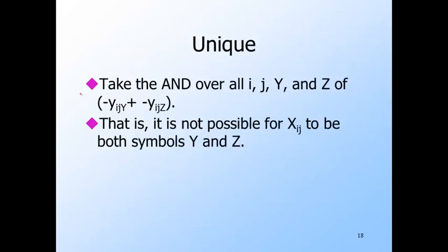For unique, we use the AND over all IDs I, positions J, and states or tape symbols Y and Z, of the expression NOT Y-sub-IJY OR NOT Y-sub-IJZ. This little expression is satisfied as long as at most one of the two Boolean variables Y-sub-IJY and Y-sub-IJZ is true. Put another way, if X-sub-IJ were to have two different symbols Y and Z, then one of these little expressions would be false. The entire expression cannot be satisfied by any truth assignment that makes any pair of variables Y-sub-IJY and Y-sub-IJZ both true.